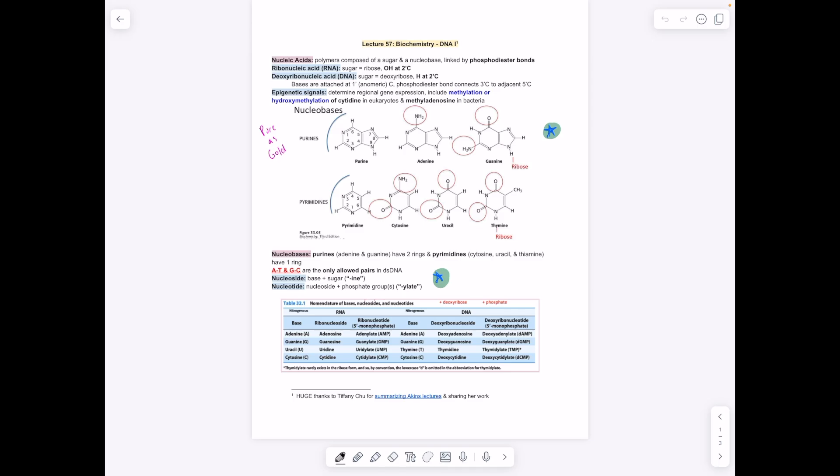To start, we're looking at DNA1, which is the structure of DNA and what makes up DNA overall. DNA and RNA, or nucleic acids, are made up of nucleotides. What separates RNA from DNA is that for RNA, for the sugar ribose, you have an OH at the second carbon, whereas for deoxyribonucleic acid DNA, you have a hydrogen there, not an OH group.